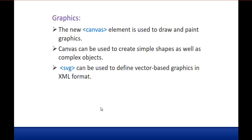Coming to graphics — if you need to draw something on a webpage or animate something, you can achieve that with two newly introduced elements: canvas and SVG. Canvas is used to draw things on the HTML page, while SVG can be used to define vector-based graphics in XML format. These two define the graphics feature in HTML5.